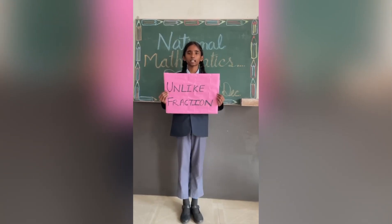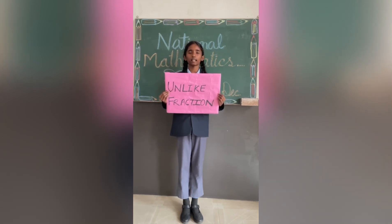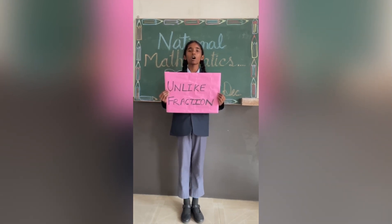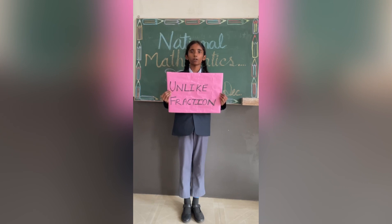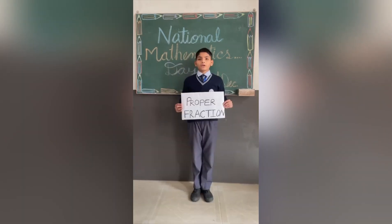Unlike fractions: fractions having different denominators are called unlike fractions. For example, 5 upon 9, 7 upon 8, 3 upon 4, 1 upon 3, etc. are unlike fractions.